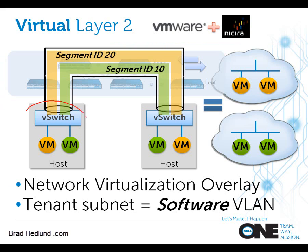What the software at Nicira did was focus on that software switch in the host machine, rather than it being some dumb layer 2 bridge extension of the top of rack. They made it a lot more intelligent, where it can take those packets from the VM, wrap them into an IP header — basically a tunnel — send it to the destination host, unwrap it, and dump the original frame to the destination virtual machine.